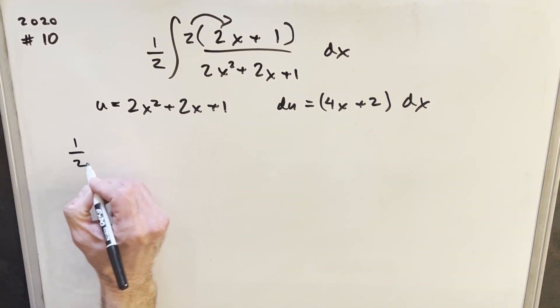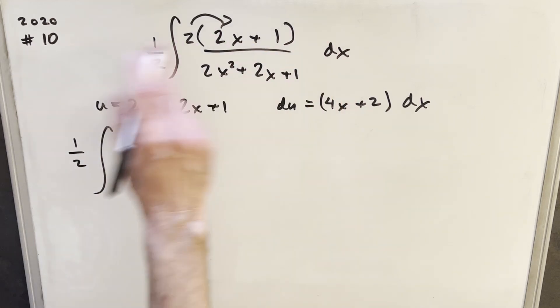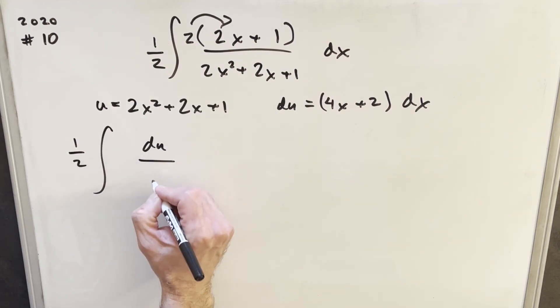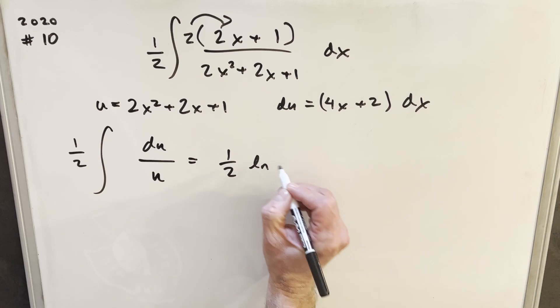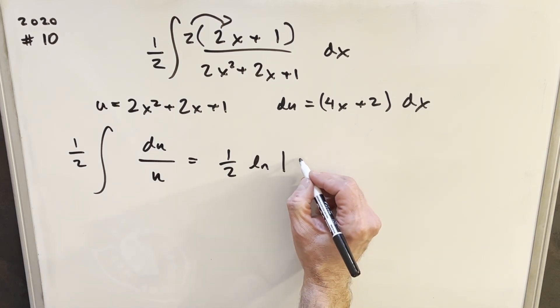So then rewriting this, we're going to have 1 half. The whole numerator is going to be our du value, so we'll just have du over u. This, of course, is a very common integral. This is just going to be the natural log, so we'll have natural log absolute value of u.